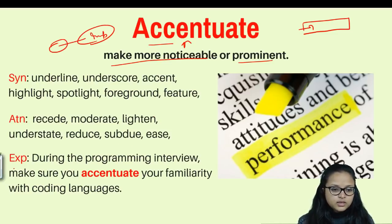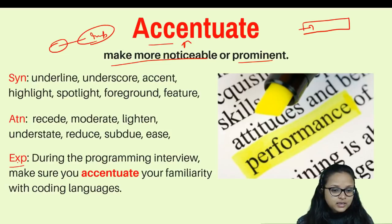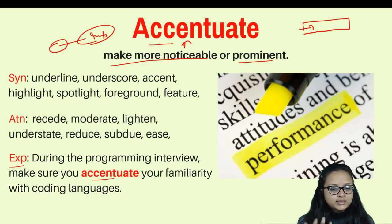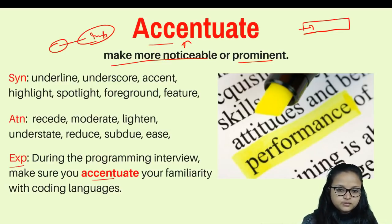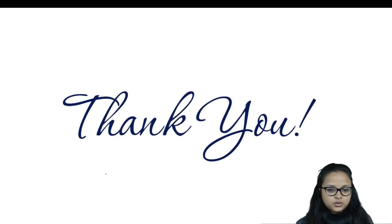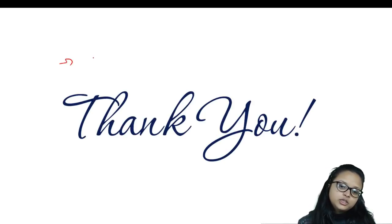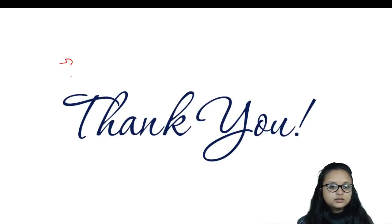Synonyms for accentuate: underline, accent, feature, foreground, spotlight, highlight. Antonyms: recede, moderate, lighten, reduce. Example: 'During the programming interview, make sure you accentuate your familiarity with the coding languages' — meaning make it noticeable to the interviewer that you can code and know many coding languages, to make it prominent.